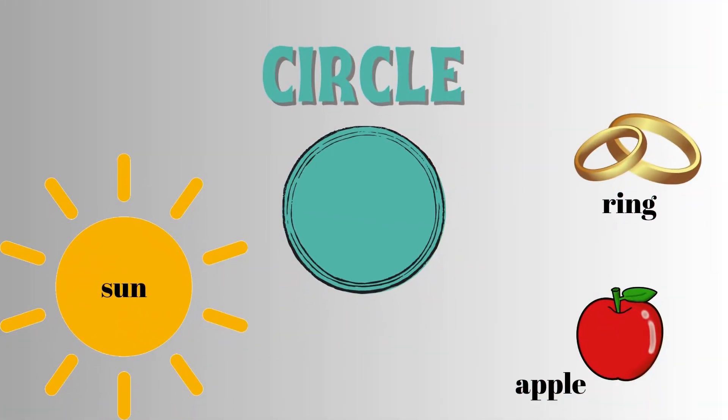Now, let's move on to the circle. A circle is a completely round shape. Every point on it is the same distance from the center. If you color the inside of a circle, you get a disk. Objects like the sun, an apple, or a ring are similar to the shape of a circle.